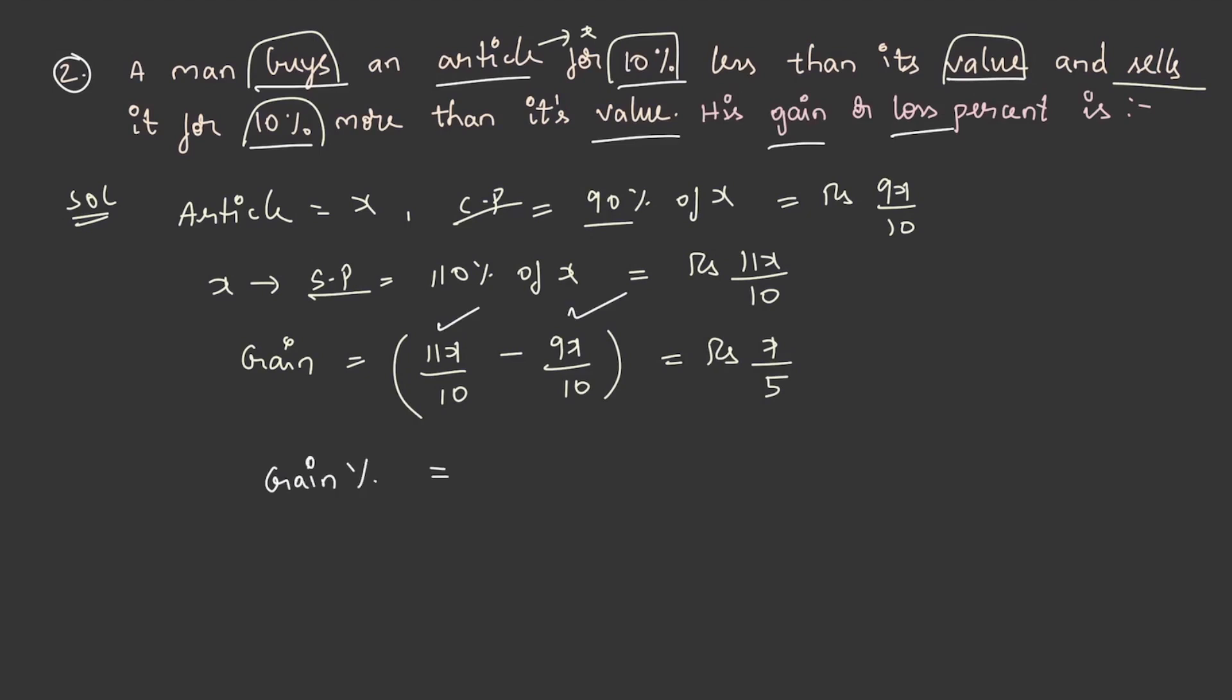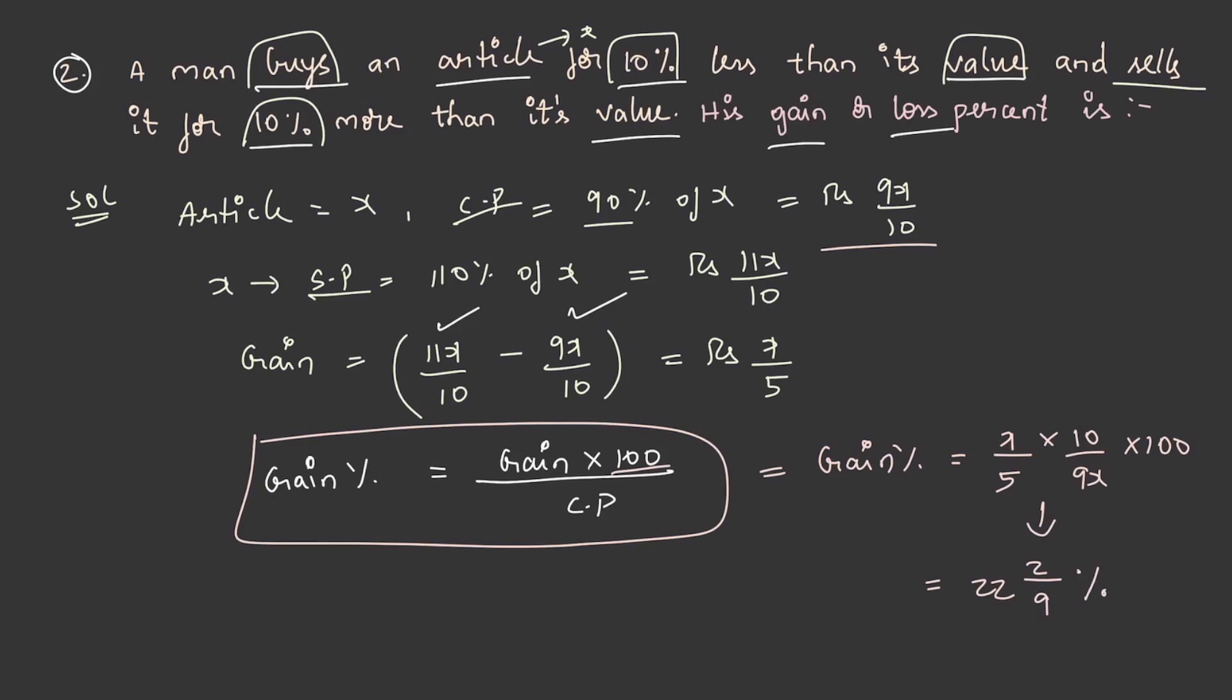Now, gain percentage is equal to gain into 100 by cost price, this is the formula. On substituting the values, we get gain percentage as x by 5 and the cost price is 9x by 10. So, on reciprocating it, we get 10 by 9x and we write 100 as it is. So, on solving this, we get the gain percentage as 22, 2 by 9 percentage.